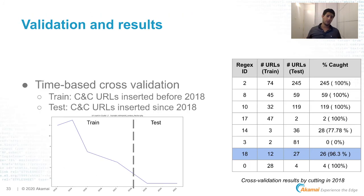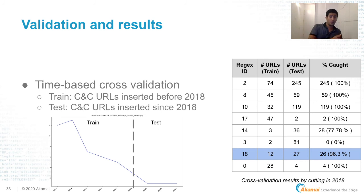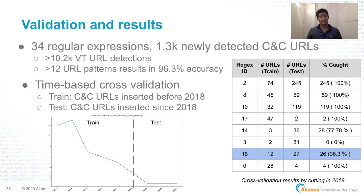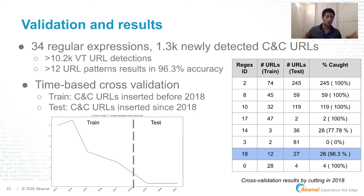About the results. First, we did cross-validation: we trained on all data up to 2018 and tested against data collected after 2018. We saw that from only 12 URL paths you can achieve 26.3% accuracy with no false positives — which is very impressive. If you have more than 12 paths, you can see in the table that you get 100% catch. With this dataset we ended up with 34 regexes that detected more than 1,300 new CNC URLs. We also tested those 34 regexes against VirusTotal URLs and discovered 10.2k CNC URLs there.